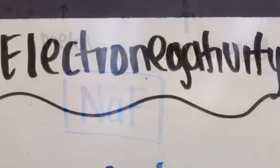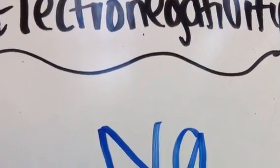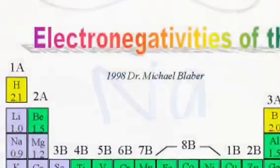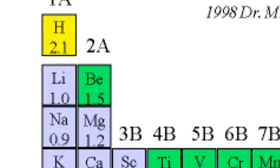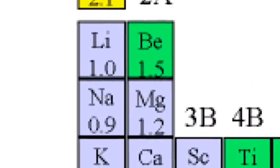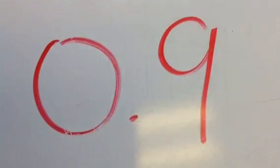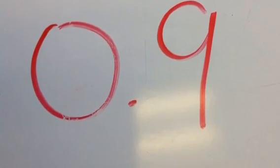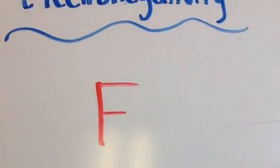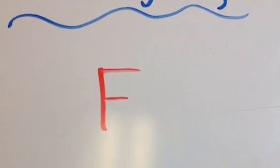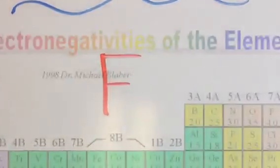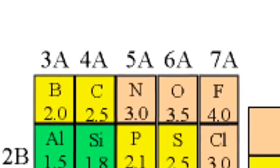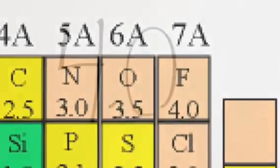We have to find the electronegativity of sodium, so we have to look on the electronegativity chart. We see that sodium, Na, is 0.9. Now we have to find the electronegativity of fluorine. We look back at the chart and we see that it is 4.0.